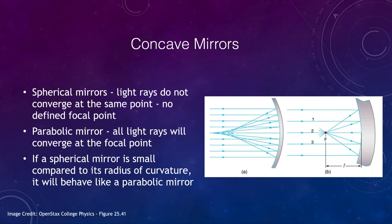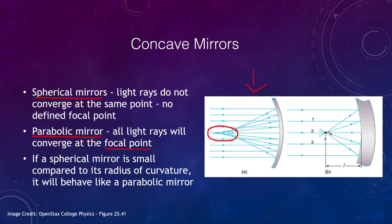Let's look at concave mirrors. A concave mirror curves inward, and we can have two different types: a spherical mirror or a parabolic mirror. In a spherical mirror, the rays do not converge at the same point — there is no well-defined focal point. A parabolic mirror, on the other hand, has all rays converge at the focal point, giving a very well-defined focal point. This is why in things like telescopes, a parabolic mirror is used — it brings all the light from all parts of it to the same focus.